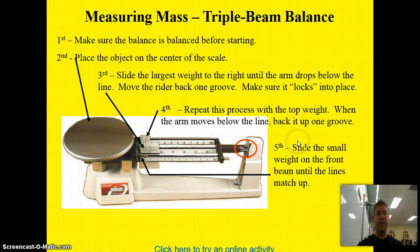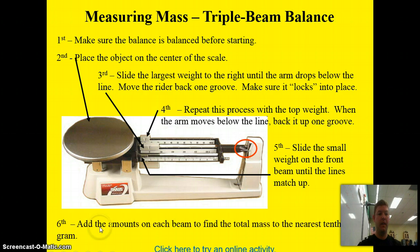Fifth, you now slide the small slider up front across, and you slide that small weight on the front until the beam, until the lines right here line up. That's when you know it's balanced. Sixth, add the amounts on each beam to find the total mass to the nearest tenth of a gram.